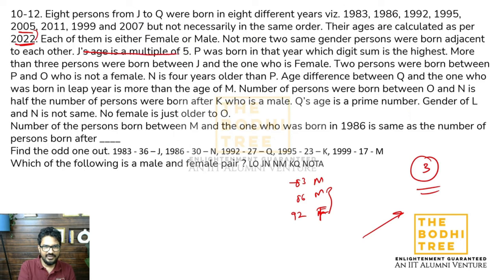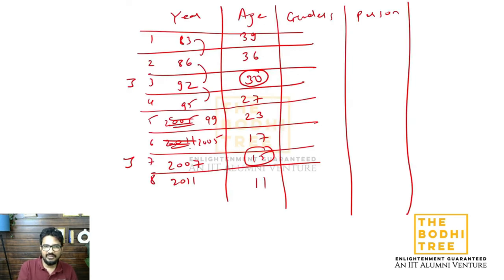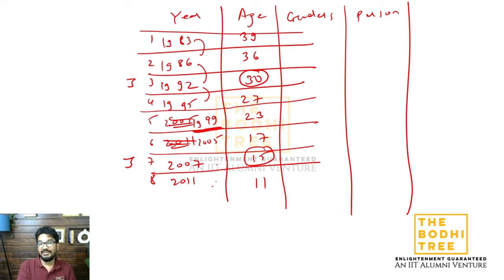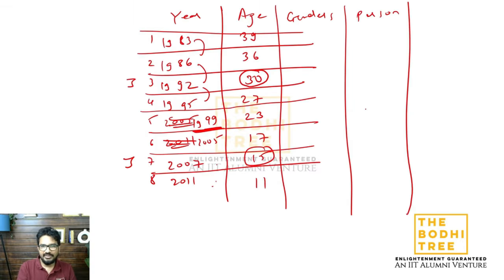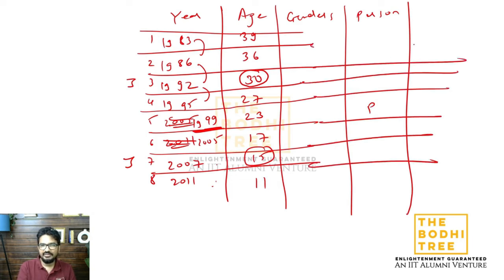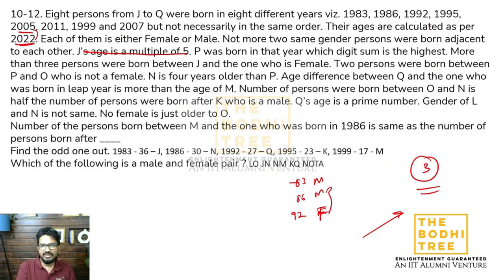J's age is multiple of 5. P was born in that year which digit sum is the highest. Toh dekho - 1999 highest rahega kyunki usmein 3 nines hain. Toh P wahan born hua. P was born in the year jahan par digit sum highest hai - that is 1999. P aur J ke beech mein more than 3 persons hain - yeh hold par rakho.